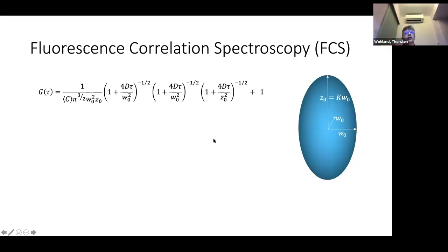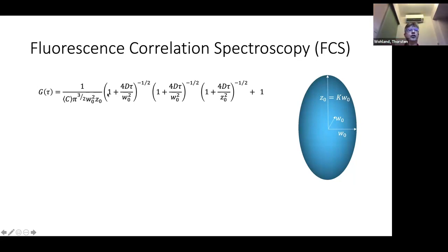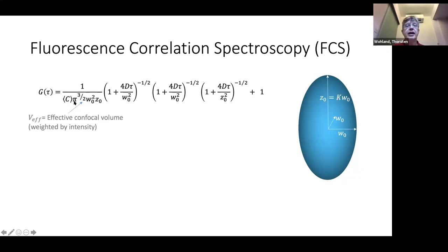Here is the model for the correlation function of a particle diffusing through the focal volume. G(tau) is the correlation function. In the front you have the average concentration c and the effective confocal volume; multiplying those gives you the number of particles N, so the amplitude of the correlation function is one over N — the more particles, the lower the amplitude.